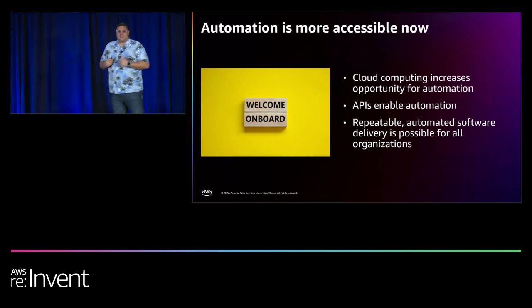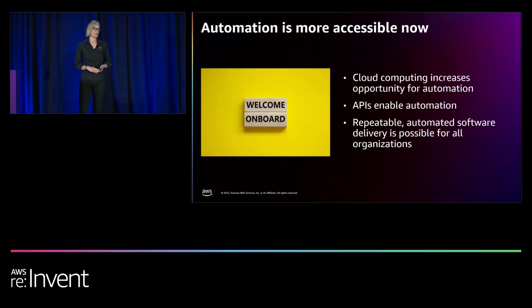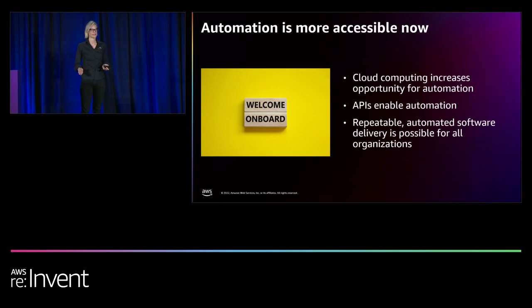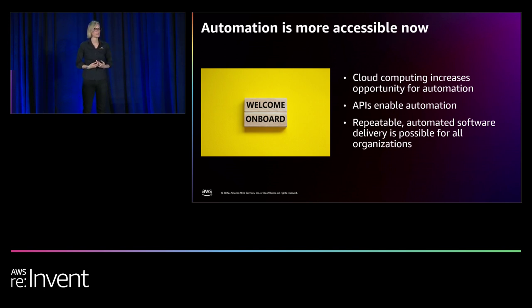I'll turn it over to Emily to talk about the state of automation. Thanks, Aaron. The good news is that adopting automation now is actually easier than it has been in the past. Automation into the software and infrastructure process has generally increased across the board in all industries, thanks to cloud. Because of cloud APIs and services, automation at scale is available not just to elite performers — all organizations, regardless of size or team skill set, can start to incorporate automation into their processes.